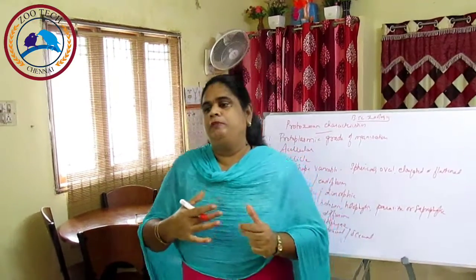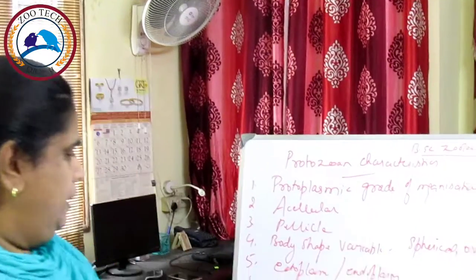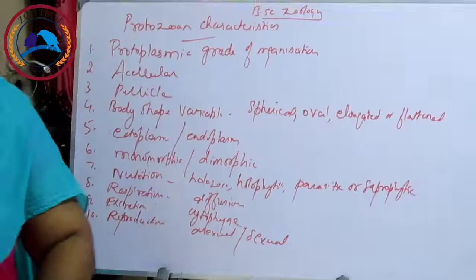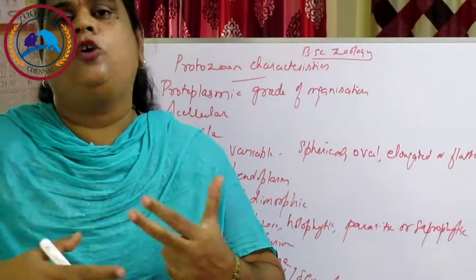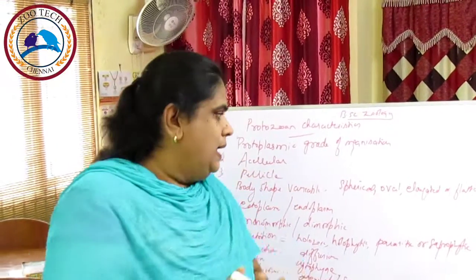In binary fission, the parent cell divides itself into two equal and identical daughter cells. In multiple fission, a single parent cell is divided into many daughter cells — both are forms of asexual reproduction occurring with only one parent. The life cycle often involves alternation of generations, including asexual and sexual phases.